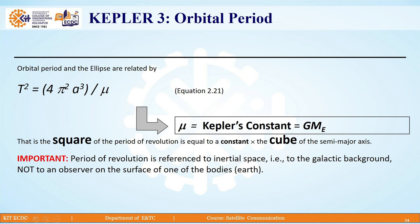It is given by the equation T² = 4π²A³/μ. We know that μ is Kepler's constant and it is given by G·Mₑ.